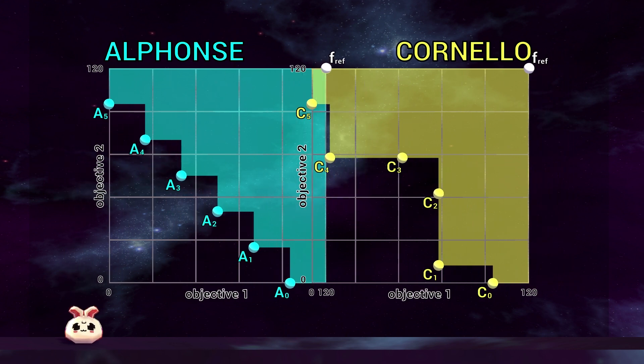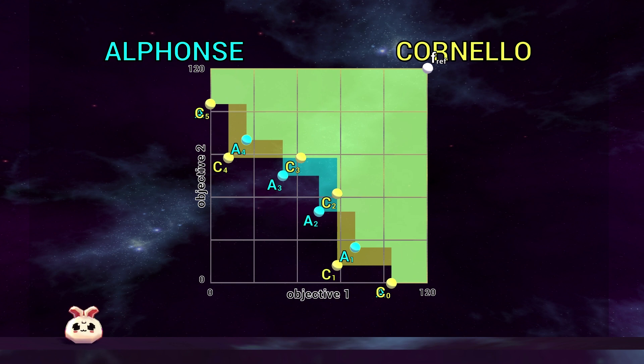If we overlay the shaded areas which visualize the dominated objective space, we can see that besides the area that is covered by both Alphonse and Cornello, Cornello exclusively covers more area than Alphonse.